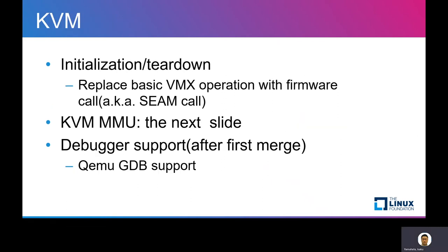Let's move on to KVM. KVM MMU also requires big changes — there's a dedicated slide for that. In the normal VMX case, there are VMX instructions to operate on the VMX guest. In the TDX case, the operation is done through a SEAMCALL to the TDX module, replacing VMX operations. Luckily, x86 KVM already has operation tables, so it mostly works without big changes. We only added several new operations for TDX.